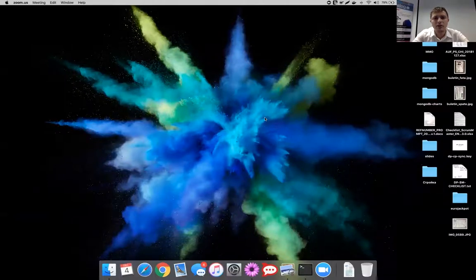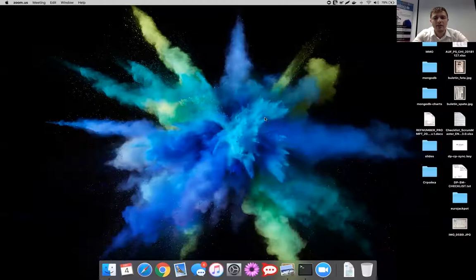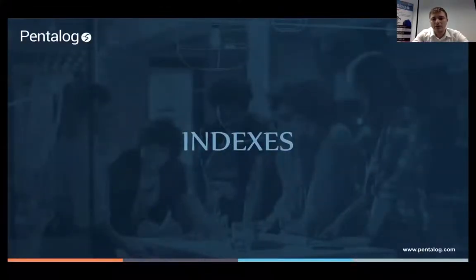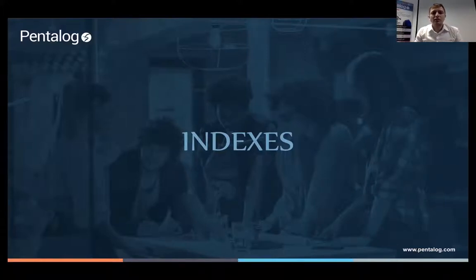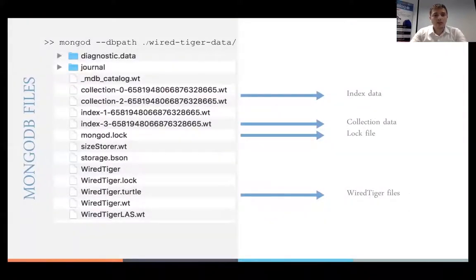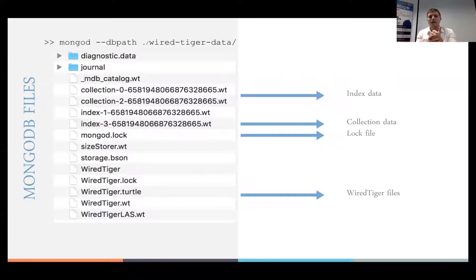We're talking about MongoDB versions 2.3 up to 4.0 — everything described applies to those versions. Let's proceed with indexes. When we finish this part, we'll have a short Q&A session and then proceed with the next topic.